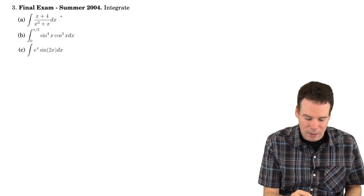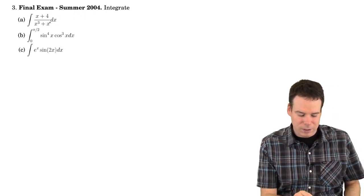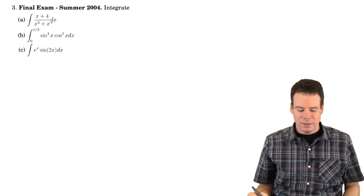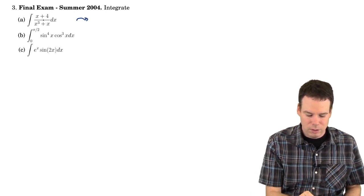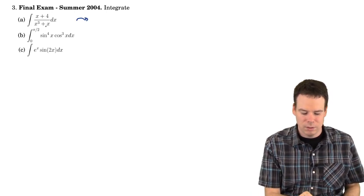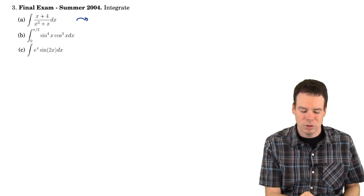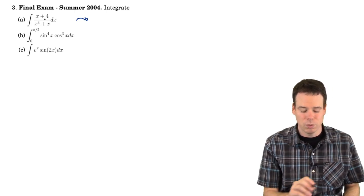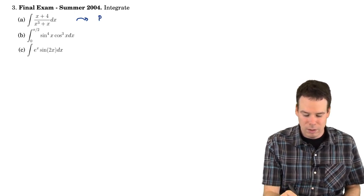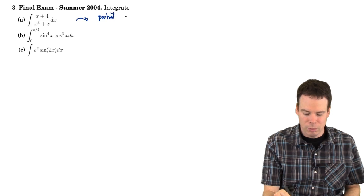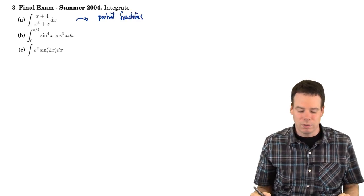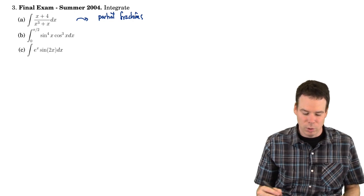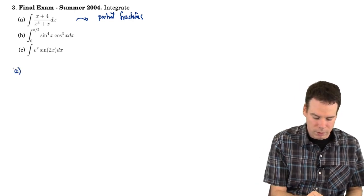Okay, so we're going to get started with these ones. The antiderivative of x plus 4 over x cubed plus x. Well, it's a rational function. The top is not the straight derivative of the bottom, so it doesn't look like substitution is going to work directly. So maybe I should apply partial fractions in this case. So that's sort of my first knee-jerk reaction. This looks like a partial fractions problem. So let's see if we can go to work on that then.